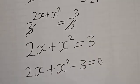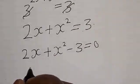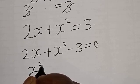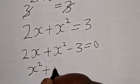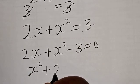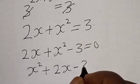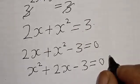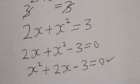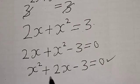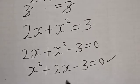We have 2s plus s squared equals 3, so rearranging: s squared plus 2s minus 3 equals 0. This is a quadratic equation. We can solve this using either the factorization method or the quadratic formula. In this case, we will use the factorization method.